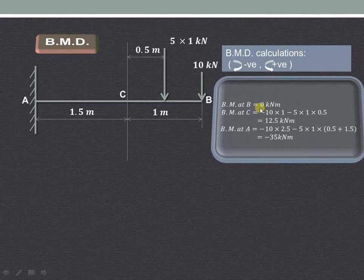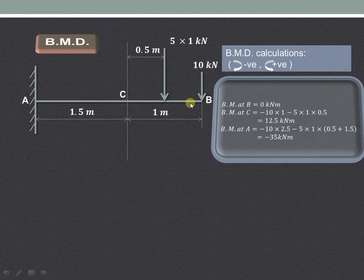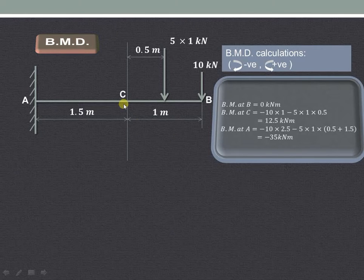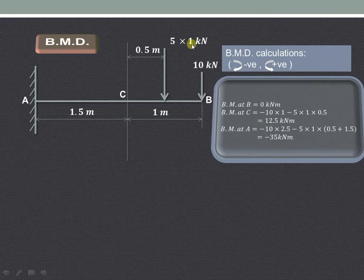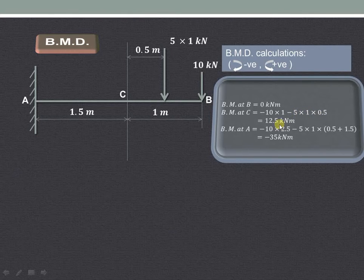Bending moment at point B is 0, because there is no force acting on the right-hand side of B. For bending moment at point C, we consider all forces on the right-hand side of C. The 10 kN force produces a clockwise moment about C, so it is minus 10 into 1 meter. Then 5 into 1 multiplied by 0.5 also produces a clockwise moment, giving minus 5 into 1 into 0.5, which is minus 12.5 kN·m.